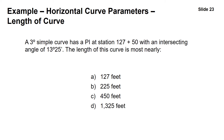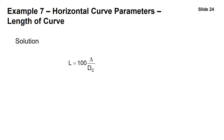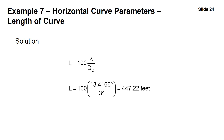Next, we find the length of curve. Using L equals 100 times delta divided by the degree of curvature: 100 times 13.4166 degrees divided by 3 degrees gives a length of 447.22 feet — answer C.